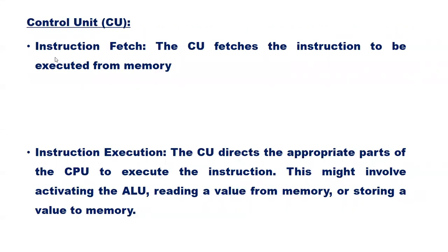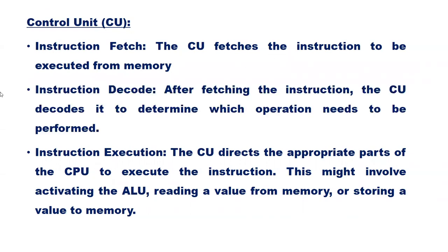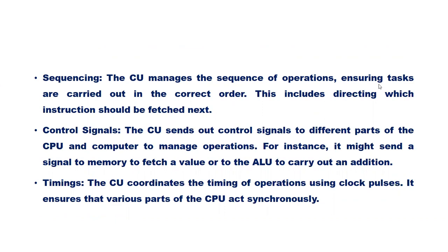The control unit's functions include: instruction fetch — fetching the instruction to be executed from memory; instruction decode — determining which operations need to be performed; instruction execution — directing the appropriate parts of the CPU, which may involve activating the ALU or reading/writing values from memory; sequencing — managing the order of operations and directing which instruction should be fetched next; control signals — sending signals to different parts of the CPU to manage operations; and timing — coordinating operations using clock pulses to ensure all parts act synchronously.